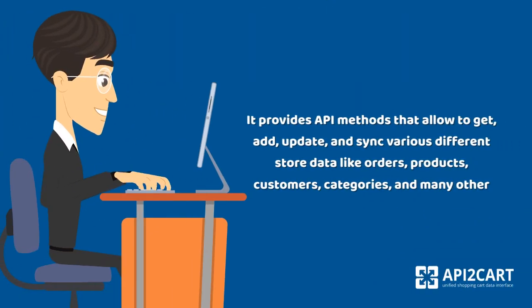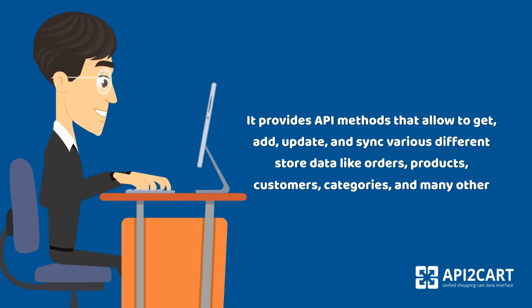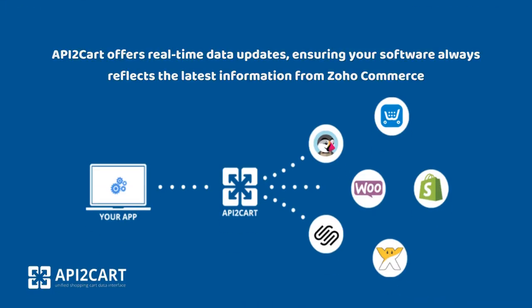It provides API methods that allow you to get, add, update, and sync various store data like orders, products, customers, categories, and many others. API2Cart offers real-time data updates, ensuring your software always reflects the latest information from Zoho Commerce.